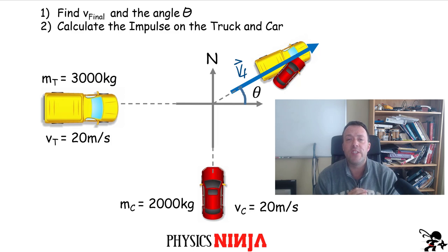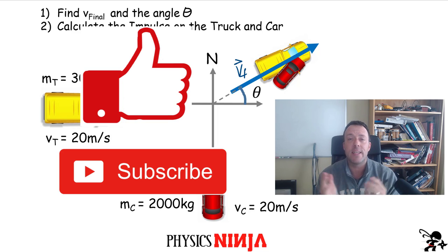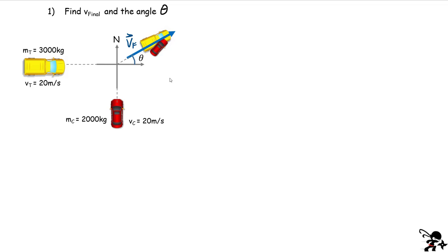The best way to support Physics Ninja is to like this video and subscribe to my channel. Let's get started. Our truck has a mass of 3,000 kilograms traveling at a speed of 20 meters per second eastbound, and the car has a mass of 2,000 kilograms traveling north at also 20 meters per second. The first question is how do we find v-final and the angle theta if after the collision both objects are locked together moving as one?